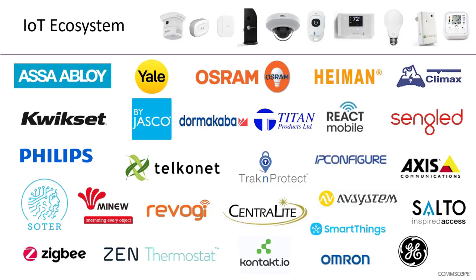On top of that, we can also support proprietary devices. Working together with key strategic alliance partners like Sota Technologies, Omron, Assa Abloy, Dormacaba, and various others, we're able to work on integrating their protocol within the IoT platform so that we're able to communicate with their devices on the bottom edge, but also forward the data into their cloud services to provide a secure network connection and a reduced overall deployment cost by utilizing our network to feed their data into their cloud.